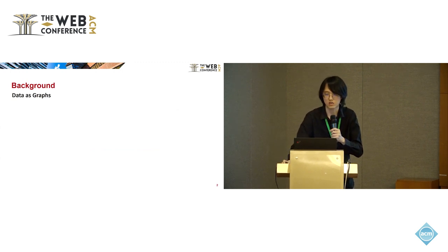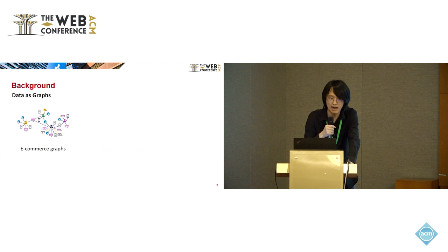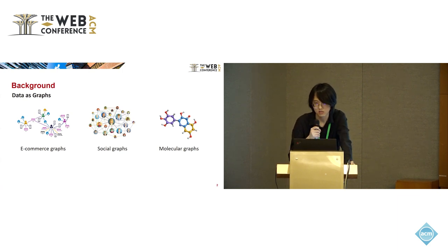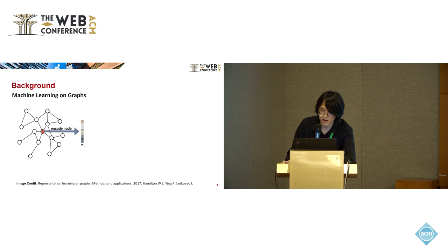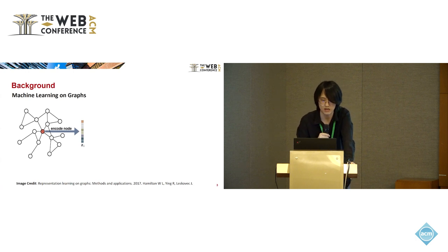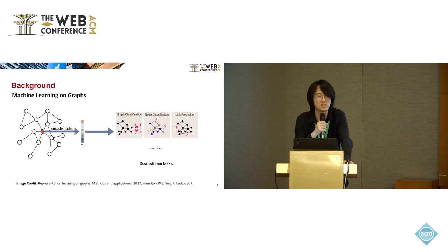Graphs are ubiquitous data structures in our daily life to describe objects connecting with each other. For example, user-item interaction data in recommender systems can be naturally represented as e-commerce graphs. Another example is our social networks, and it is also natural to represent molecules in chemicals as molecular graphs. In order to effectively learn and mine structural knowledge from graph-structured data, recent years have witnessed a rise of interest in graph representation learning. The key is to transform the non-Euclidean graph data into latent representations, and then leverage these representations to finish downstream prediction tasks on graphs.